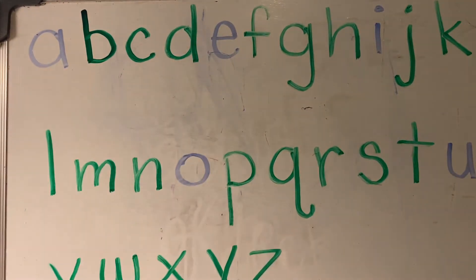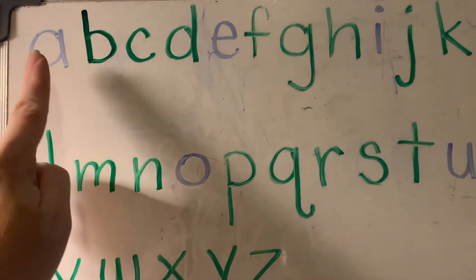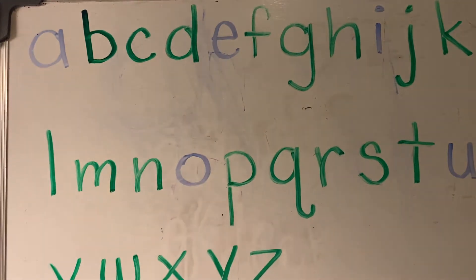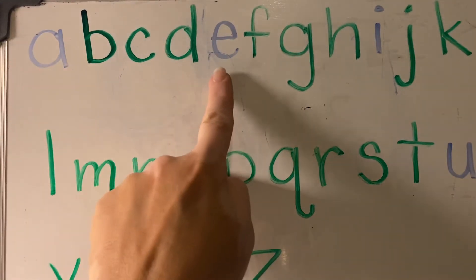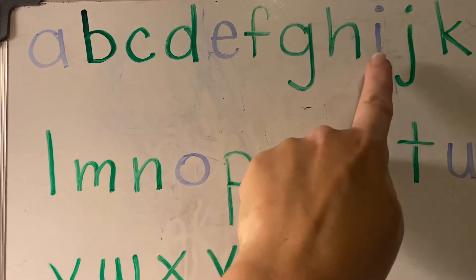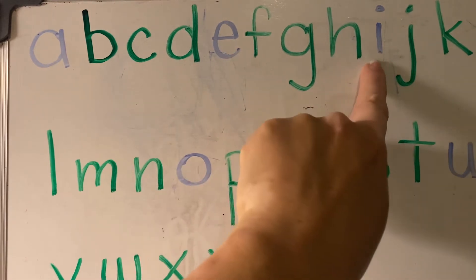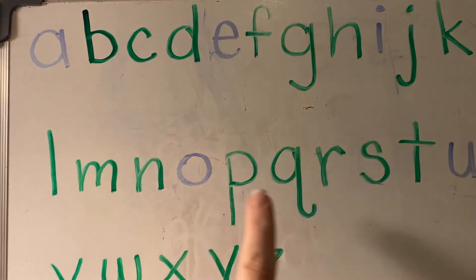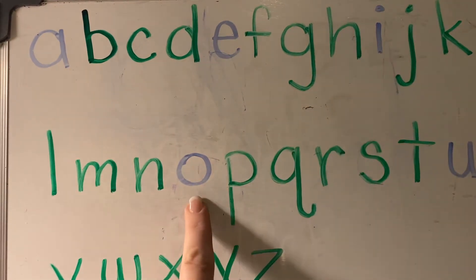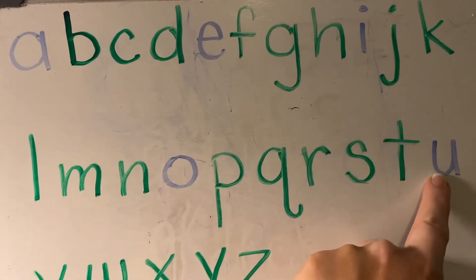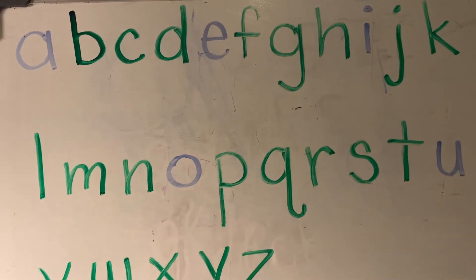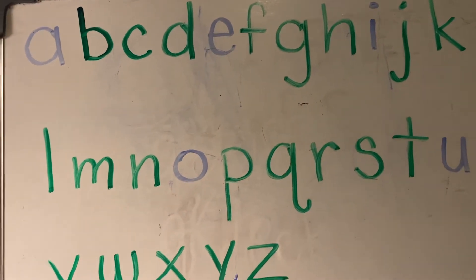The letters that are blue are called our vowels. There's A, E, I, O, and U. Those are our vowels.